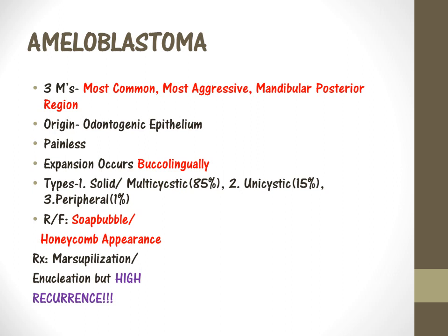Three M's need to be remembered for ameloblastoma: it is the most common, most aggressive odontogenic tumor, and it usually occurs in the mandibular posterior region, usually in the mandibular ramus area. This tumor is usually a painless, slow-growing swelling that expands the bone buccolingually. There are three types: the most common is the solid or multicystic type; second is unicystic, which occurs as a single cyst at 15%; and third is peripheral, occurring in the gingiva and oral mucosa.